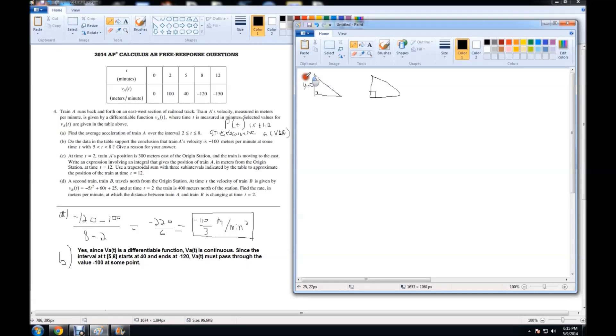The first triangle will be the distance triangle. This is for train B. For train A at time T equals 2 - well actually, the rate is a constant here. At T equals 2, train B is 400 meters north of the origin, so we're going to keep this as a positive 400. Train A, it tells us in part C that at time T equals 2, train A's position is 300 meters east. So this would be 300, and it's positive again. Because this is a 3, 4, 5 triangle, we know that the hypotenuse is 500.